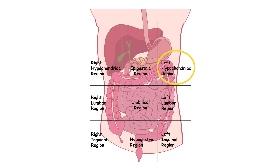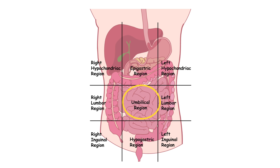The right lumbar region includes the ascending colon and right kidney. The umbilical region includes the small intestine and transverse colon. The left lumbar region includes the descending colon and left kidney.